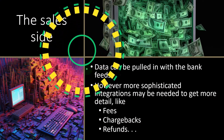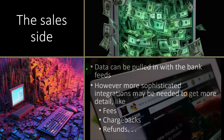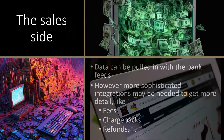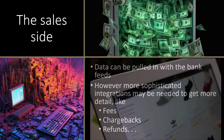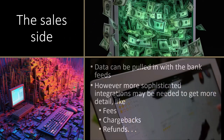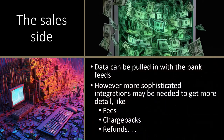So we'll get into some other different methods we could use. We could connect to the bank, or we could try to connect directly to the platforms themselves, like Amazon and Shopify. But that adds another level of complication because now we have multiple things we're connected to — the bank and then the platforms. We also have issues if there are third-party processors like Stripe or PayPal. We'll get into more of those options in future presentations.